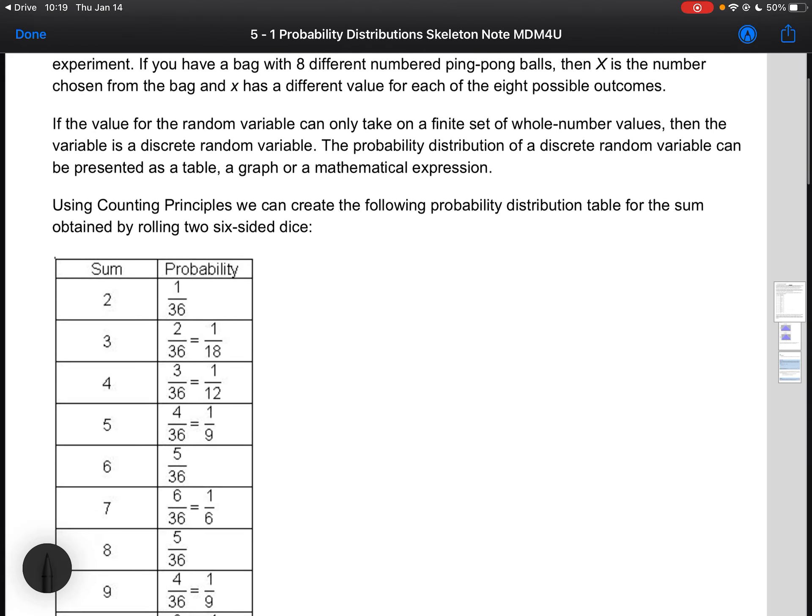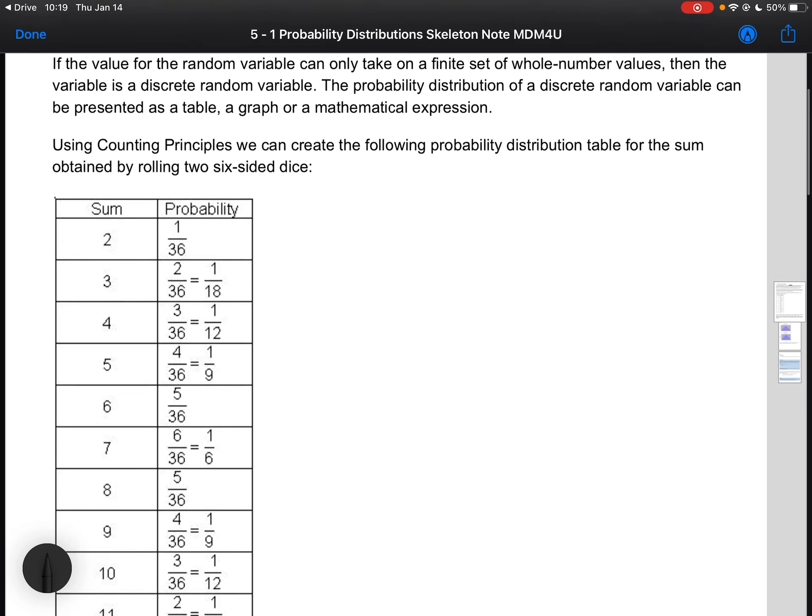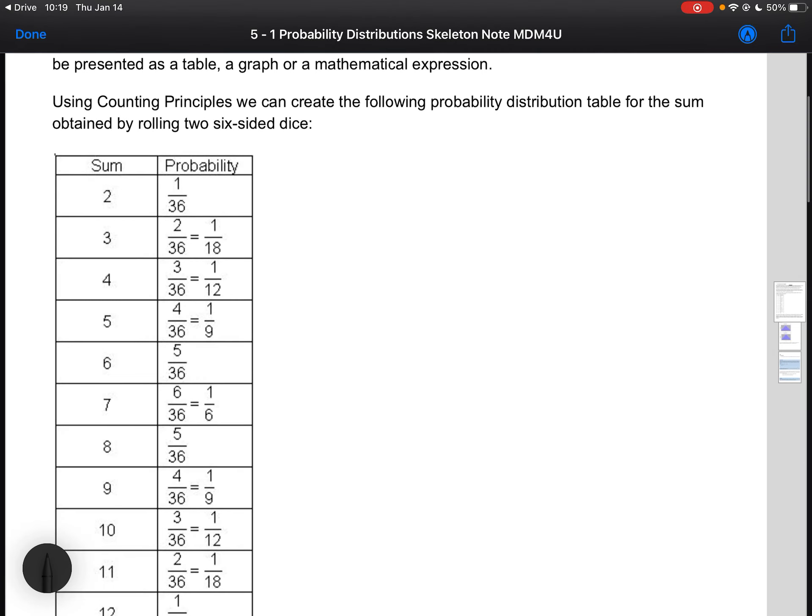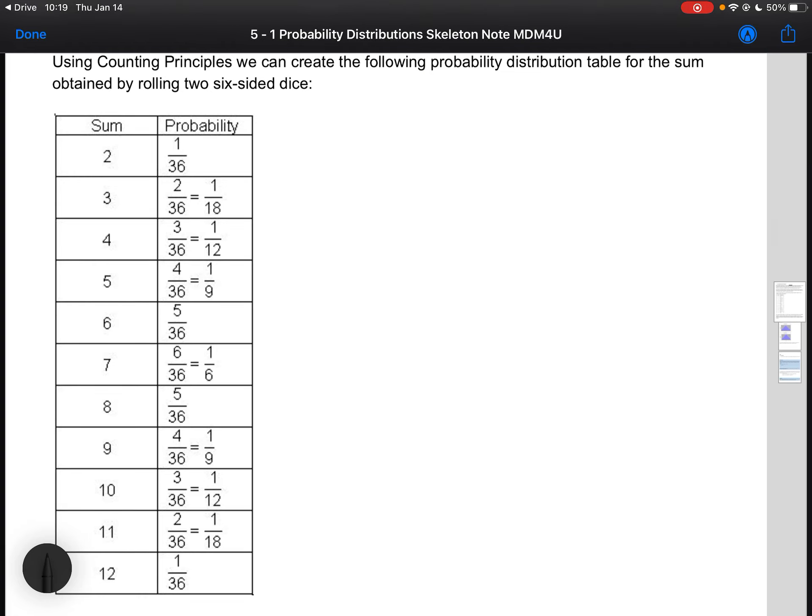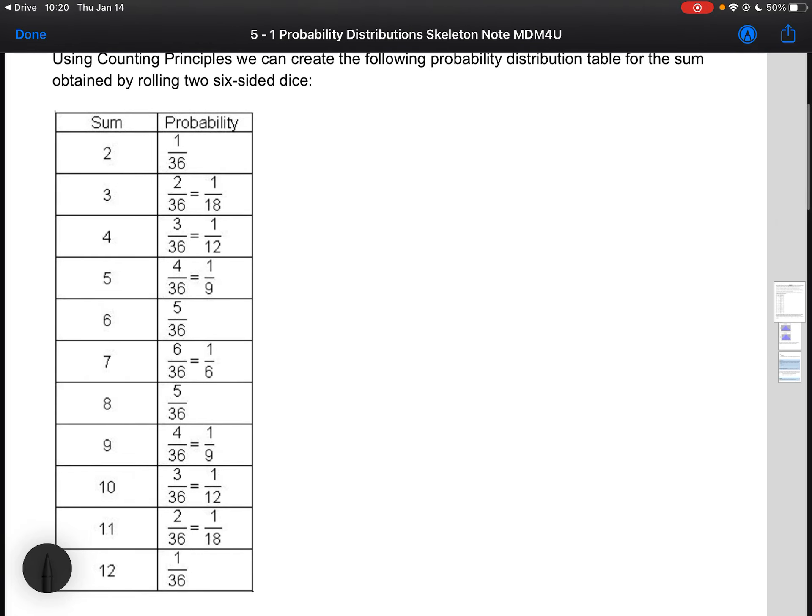Using counting principles from our previous units, we can create the following probability distribution table for the sum obtained by rolling two six-sided dice. All we're doing is finding the probability of each outcome and putting them all together in one table. That is all a probability distribution is: listing all of the probabilities for all events in one spot.